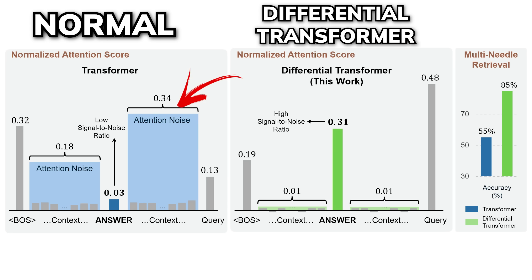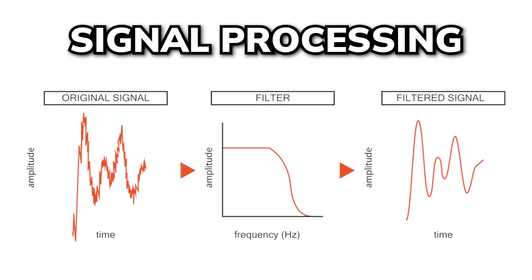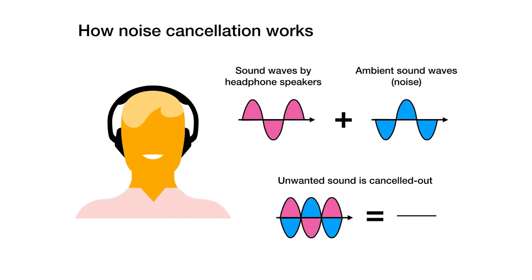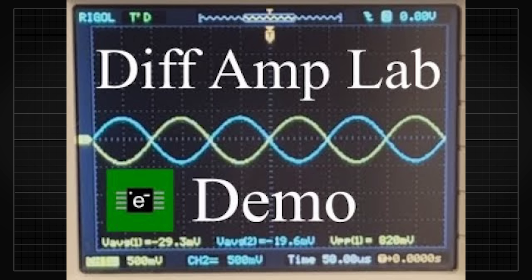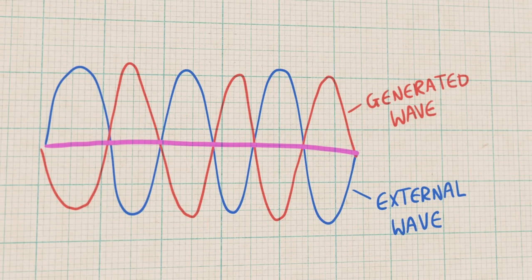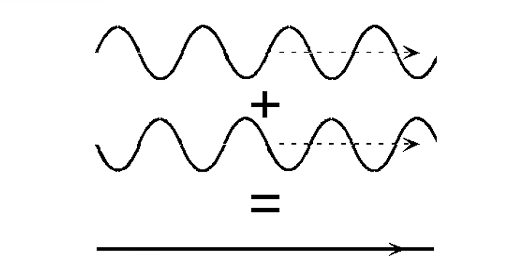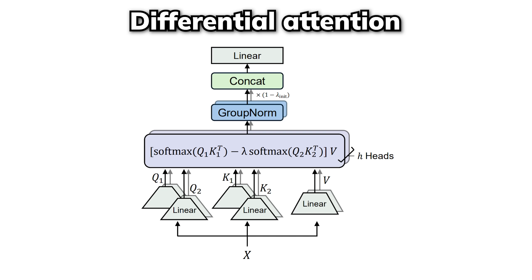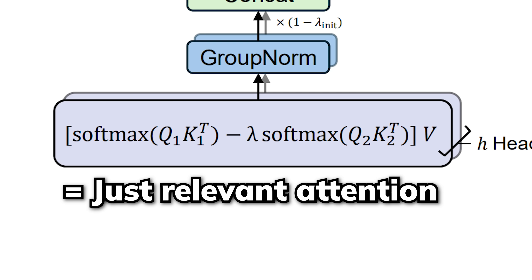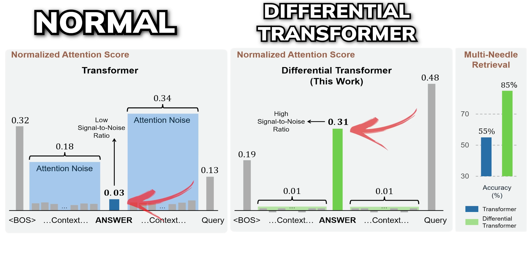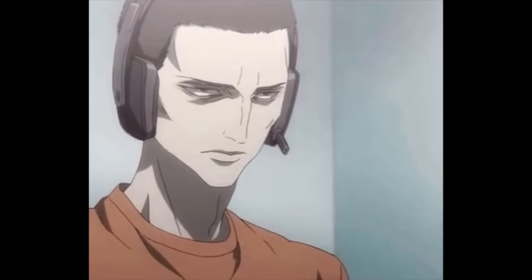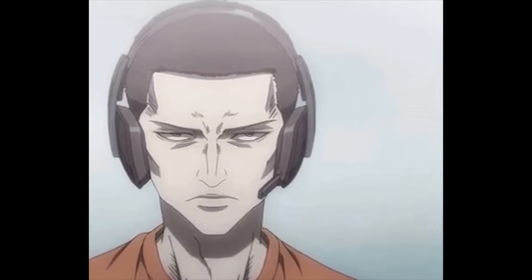And what Differential Transformer proposes is to solve this exact problem. It aims at eliminating this attention noise. Inspired by techniques from signal processing, it essentially works like noise-canceling headphones or differential amplifiers in electrical engineering, where the difference between two signals can help filter out background noise. With this intuition, differential attention computes two separate Softmax attention maps and then subtracts them. This simple yet effective method cancels out the irrelevant information and amplifies the attention on the critical parts of the sequence. So the transformer now can lock in to perform the task more accurately.